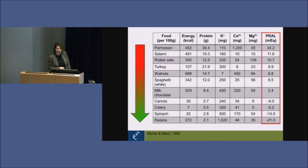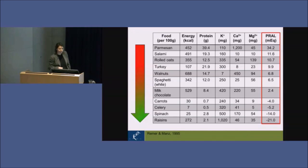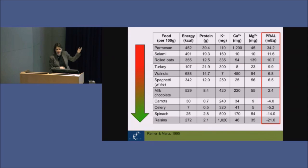Looking at a table of foods sorted by acidogenic potential, you can recognise foods like parmesan and salami at the top with high acid potential. At the very bottom you find greens like celery and spinach, and fruits like raisins, which have the opposite — an alkaline potential to buffer acidity. We can calculate this based on food dietary questionnaires.